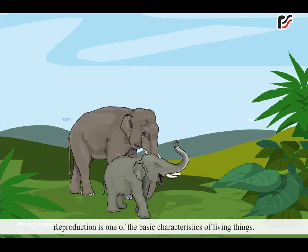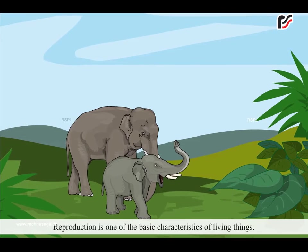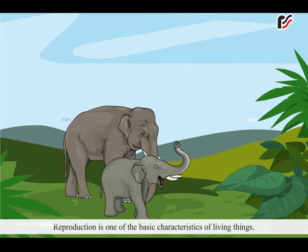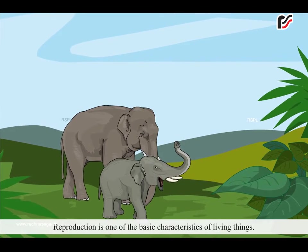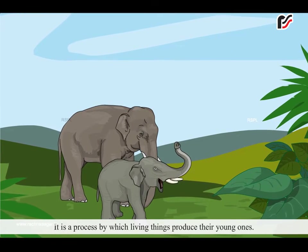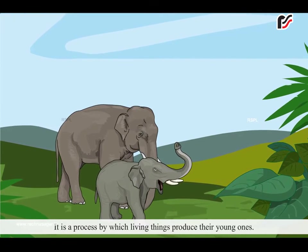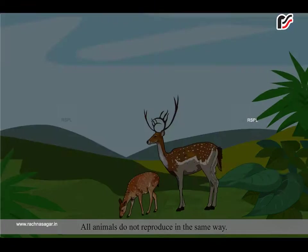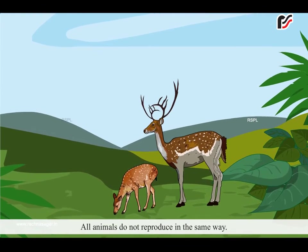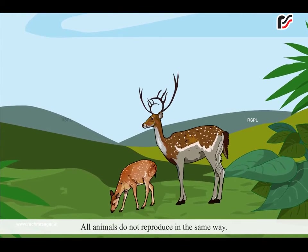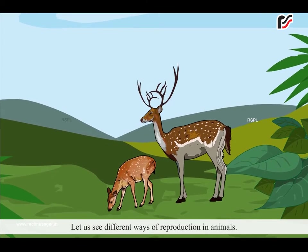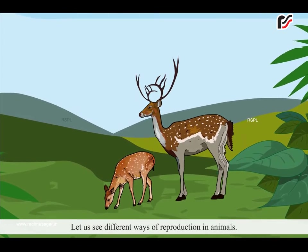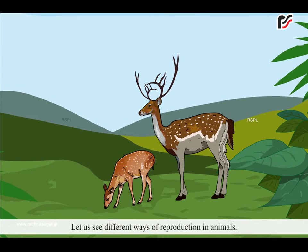Reproduction is one of the basic characteristics of living things. It is a process by which living things produce their young ones. All animals do not reproduce in the same way. Let us see different ways of reproduction in animals.